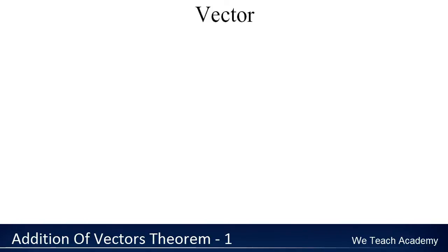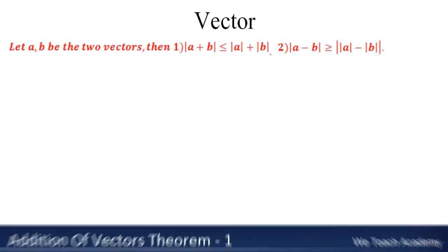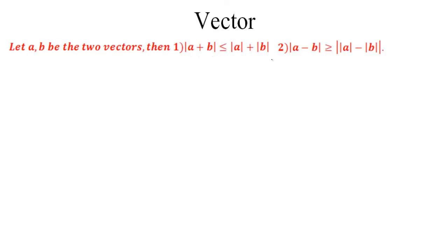The statement of the theorem is: let a and b be two vectors, then we have to prove two conditions. The first condition is |a+b| ≤ |a| + |b|, and the second one is |a-b| ≥ | |a| - |b| |.